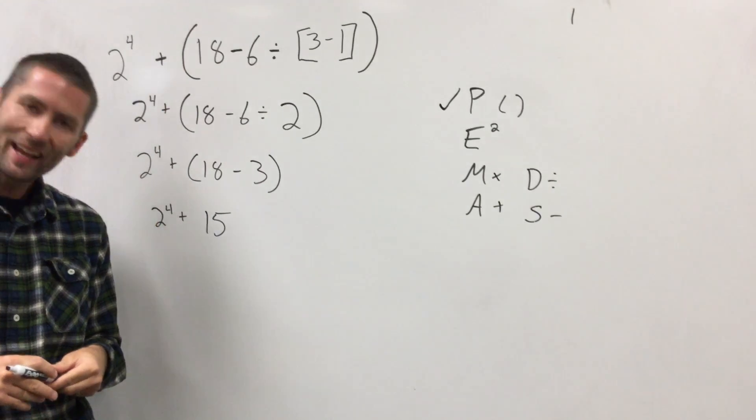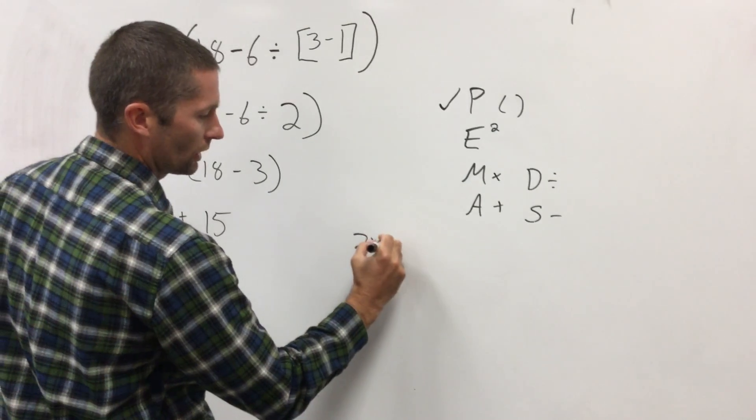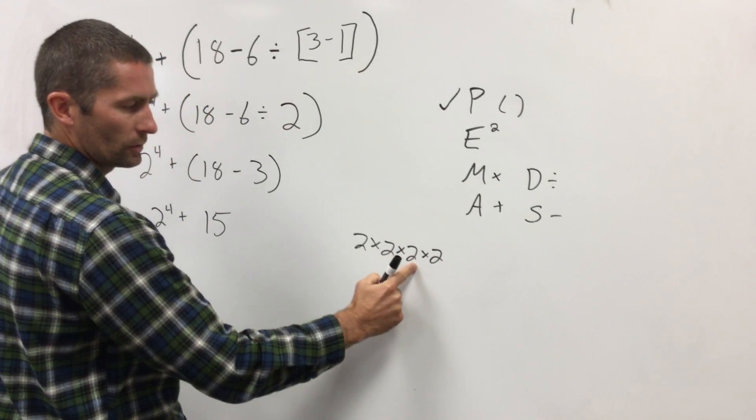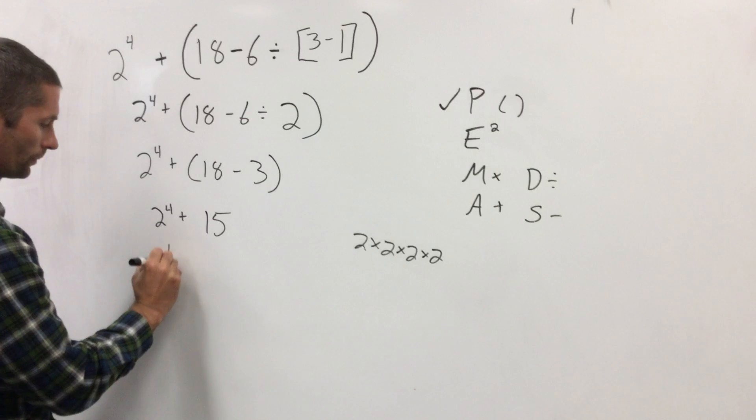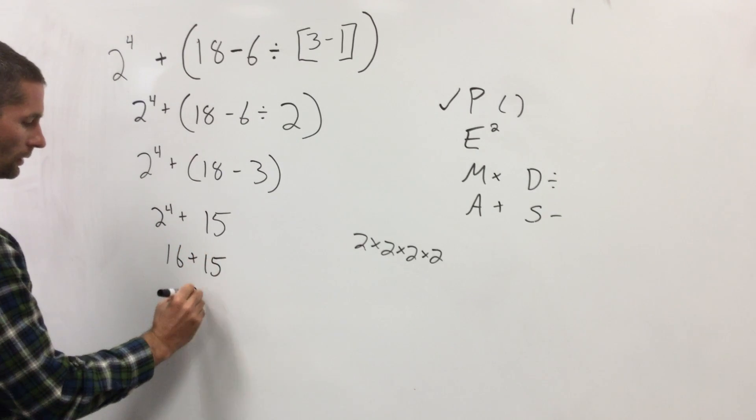Two to the power of four is not eight, it's not two times four. It's two times two times two times two. Two times two is four, times two is eight, times two is sixteen. Sixteen plus fifteen is thirty-one.